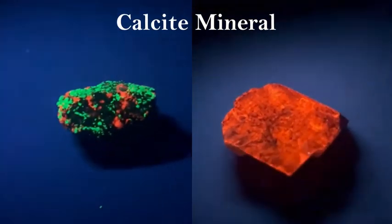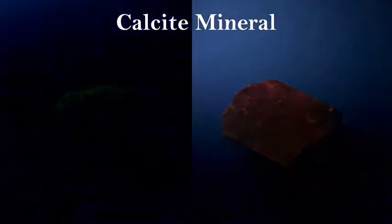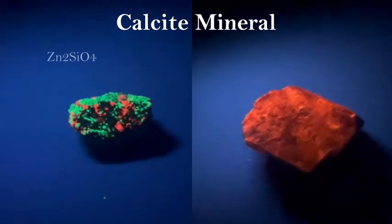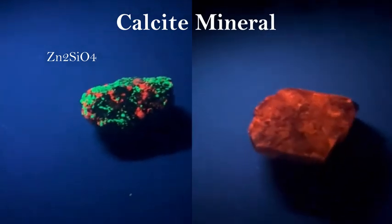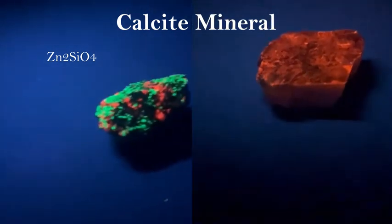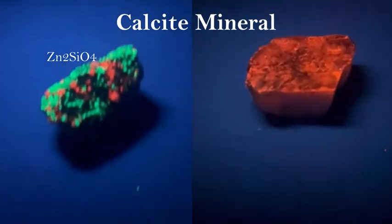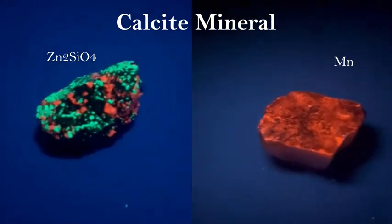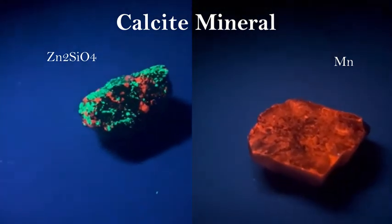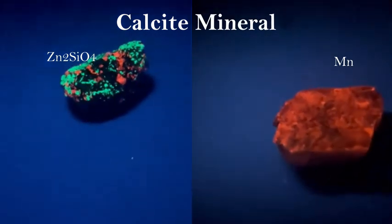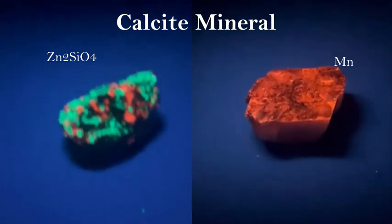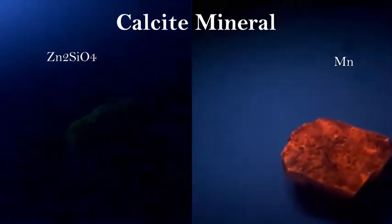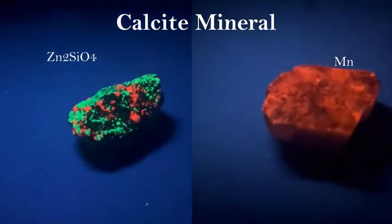Here we have two fluorescent minerals. They're both calcite, but they give off different colors based on having different elements in the mineral. On the left we have a beautiful green and red fluorescence, caused mostly by zinc producing the green color. On the right we have a beautiful red fluorescence, caused by the manganese element in the calcite reacting with the ultraviolet light. So you have these different elements within the same mineral reacting with UV radiation differently, and it's absolutely amazing.